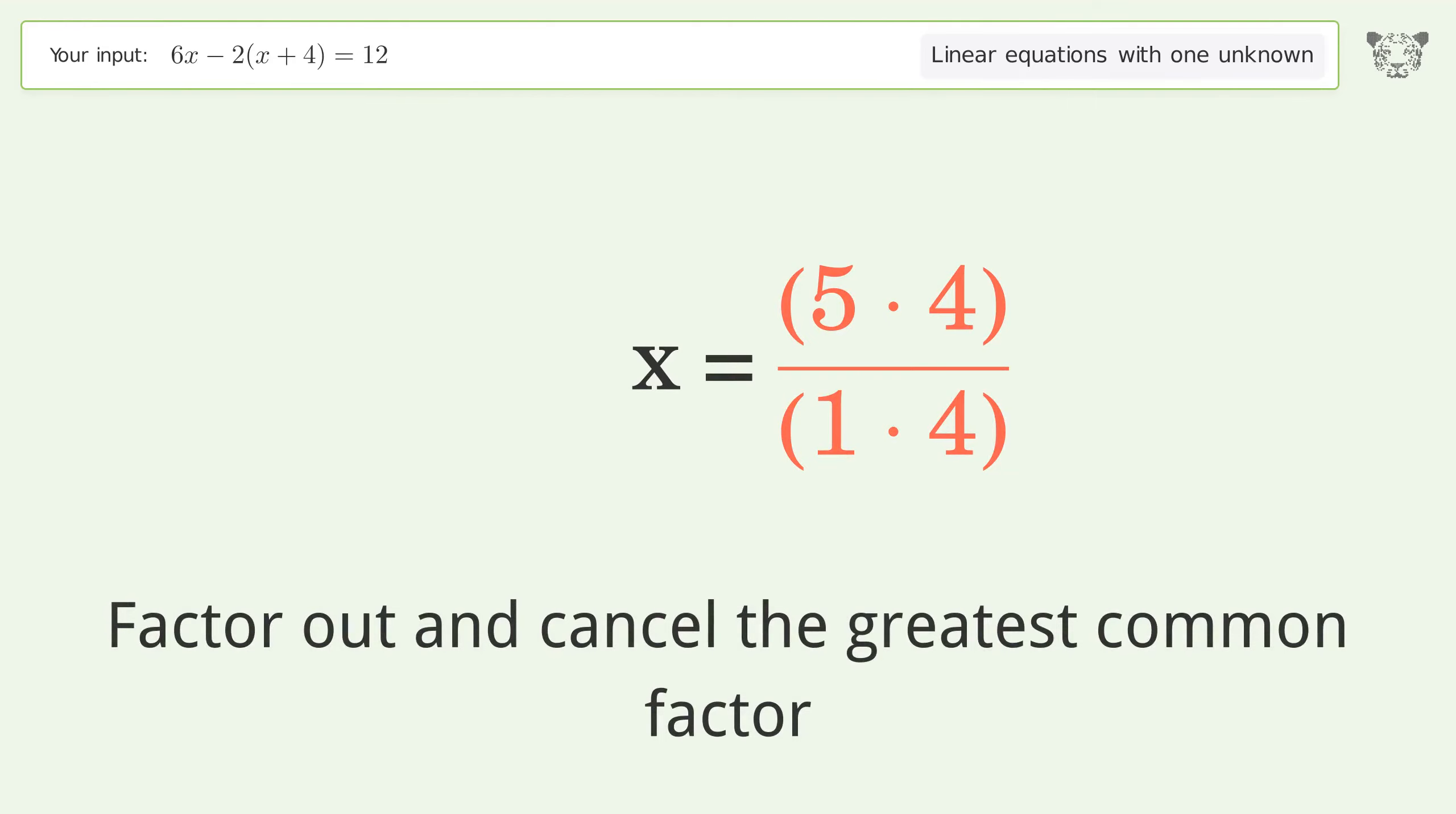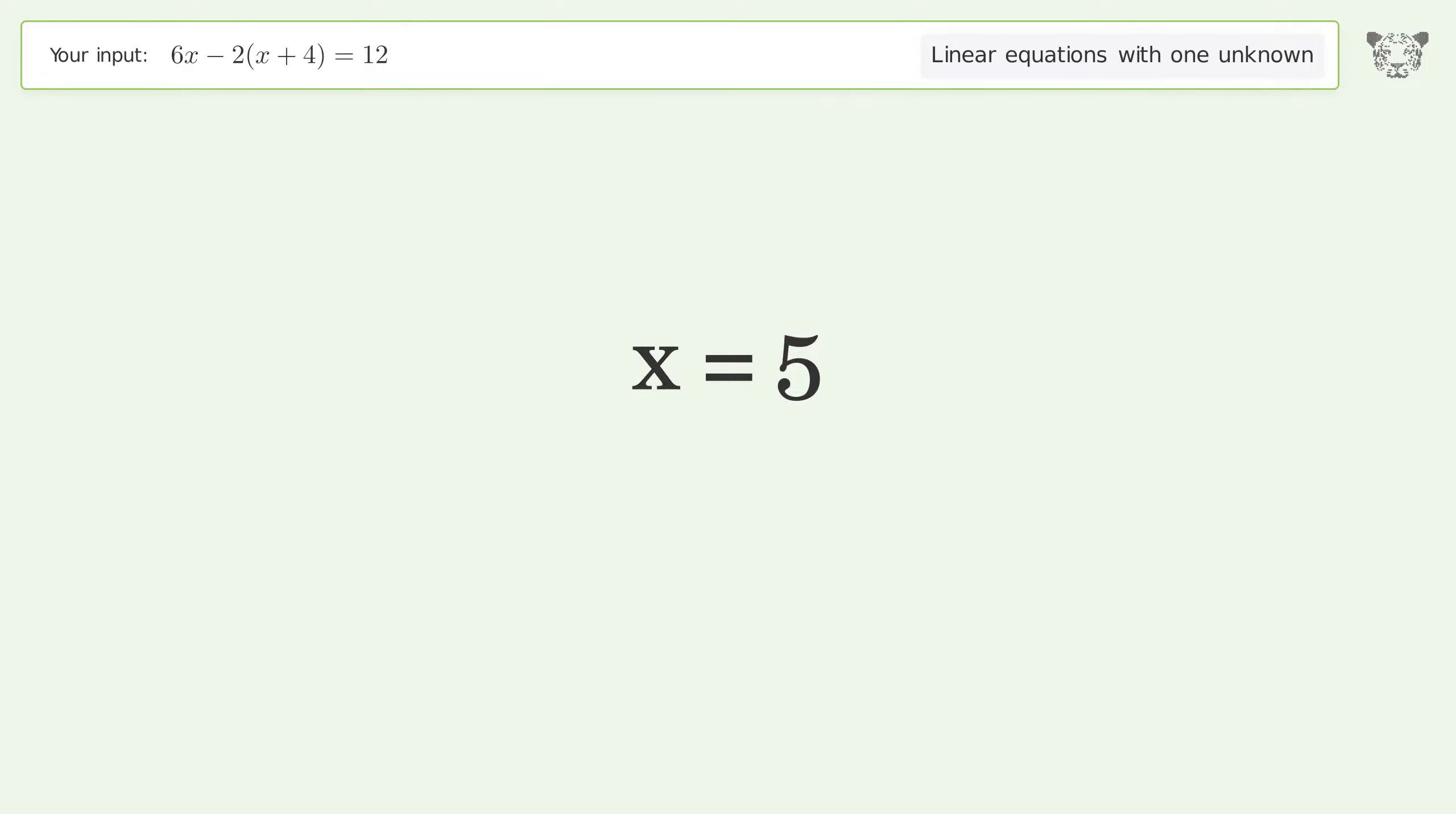Factor out and cancel the greatest common factor. And so the final result is x equals 5. Thank you.